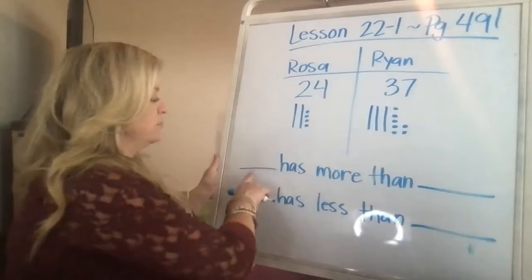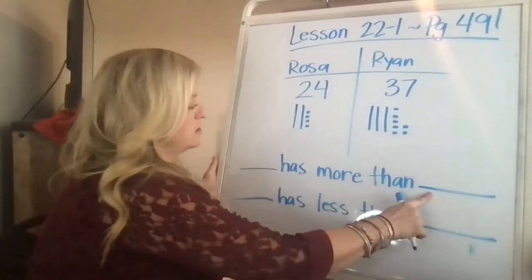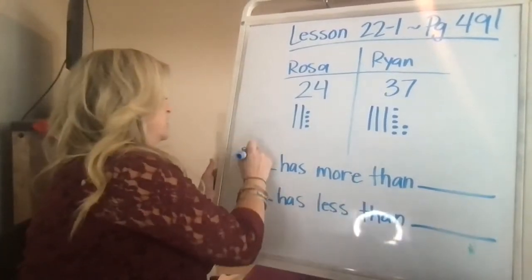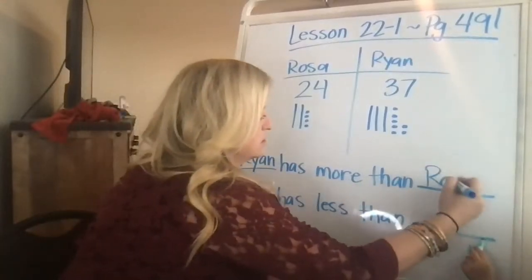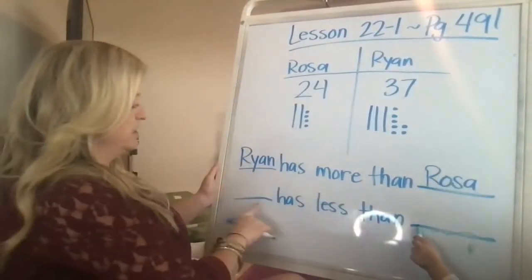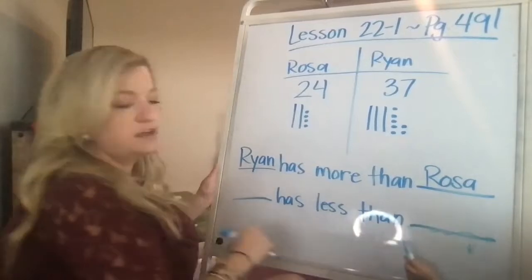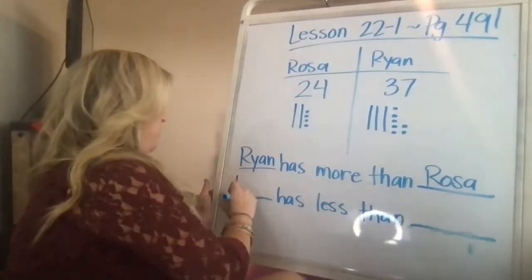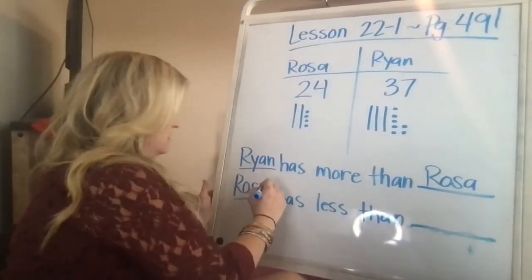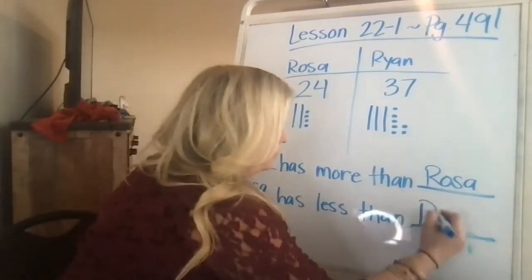So I'm going to say blank has more than blank. So I'm going to say Ryan has more than Rosa. And down here it says blank has less than blank. And I'm going to write Rosa has less than Ryan.